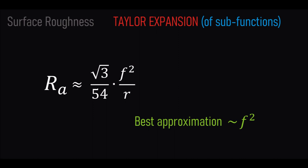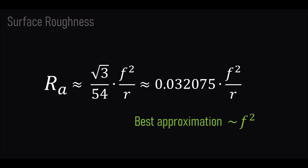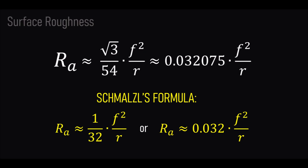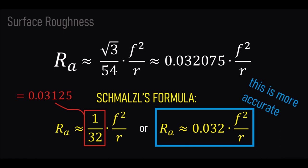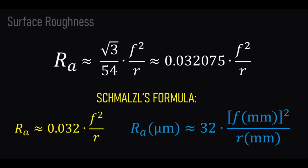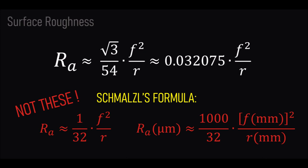Finding the sum of these two terms by finding the least common multiple of the denominators gives our final result: √3 divided by 54R, times F squared. This is the best second-degree approximation of the original exact formula for the average roughness R_A. √3 divided by 54 is approximately 0.032075. Comparing with the Schmalz formula: 1/32 is exactly 0.03125, while 0.032 is closer to our result. Therefore the second version of the Schmalz formula — using 0.032 — is the more accurate one, and that is the one to use.